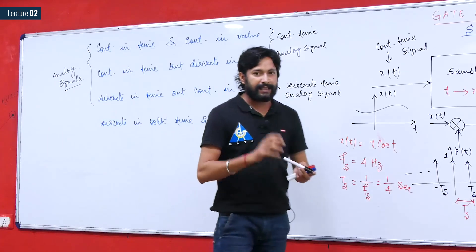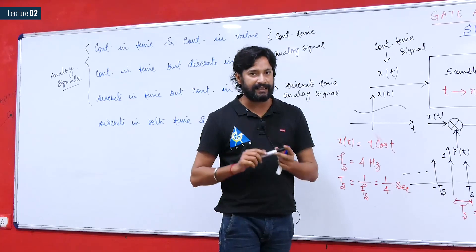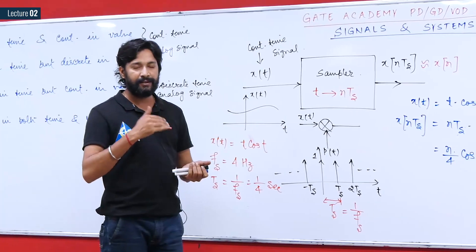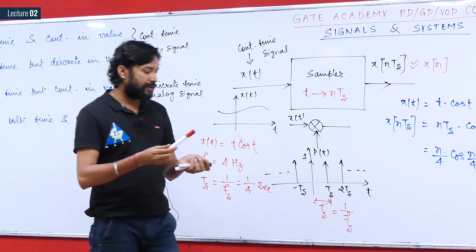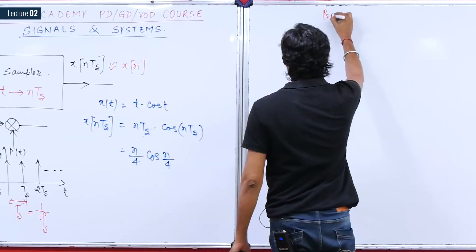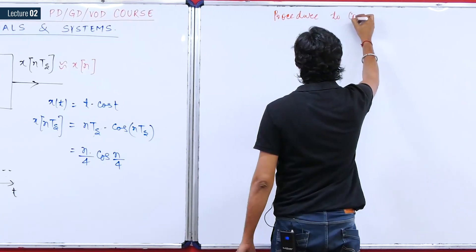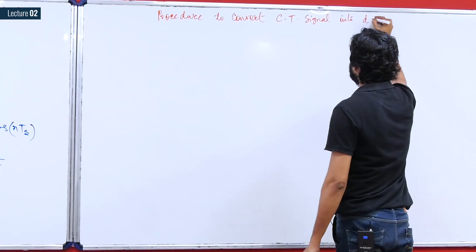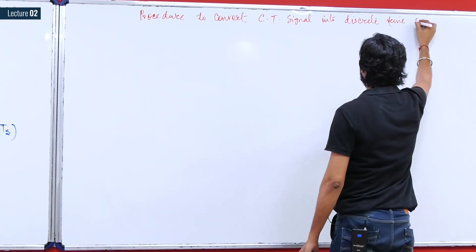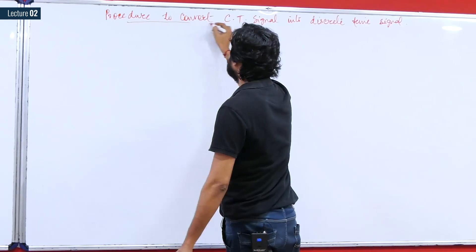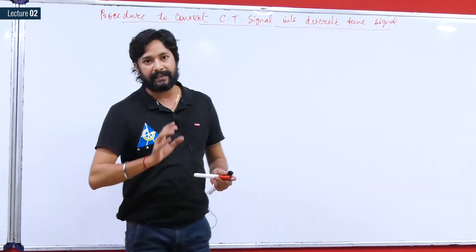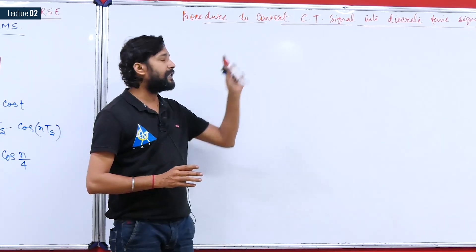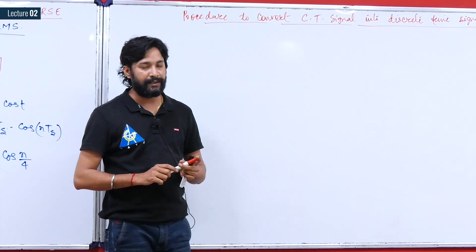There is one more important classification: continuous-time signals and discrete-time signals. The only tool to convert a continuous-time signal into a discrete-time signal is sampling. Before discussing operations on signals, we must understand different types of signals. We have covered the four basic types and now add the classification of continuous-time versus discrete-time signals.